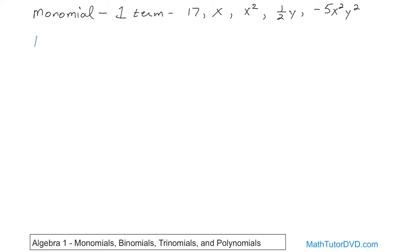Now let's compare that to something we call a binomial. What do you think binomial is going to mean? It means two terms. Think of bicycle — the prefix 'bi' means two, like bicycle: two wheels. So examples of binomials would be, for instance, 2x minus 7. Here you have one term and another term, and they're glued together with a minus sign. When I say it's two terms, it's two terms joined by a plus or a minus sign. So that's a binomial.